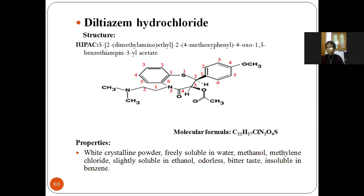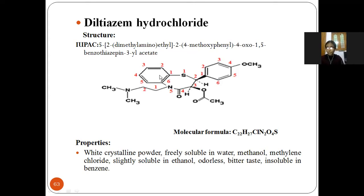Next is the benzothiazepine derivative. The drug is diltiazem. The IUPAC name is 5-[2-(dimethylamino)ethyl]-2-(4-methoxyphenyl)-4-oxo-1,5-benzothiazepine acetate. The parent nucleus is benzothiazepine — benzo means two benzene rings, thio means sulfur, and aza means nitrogen.